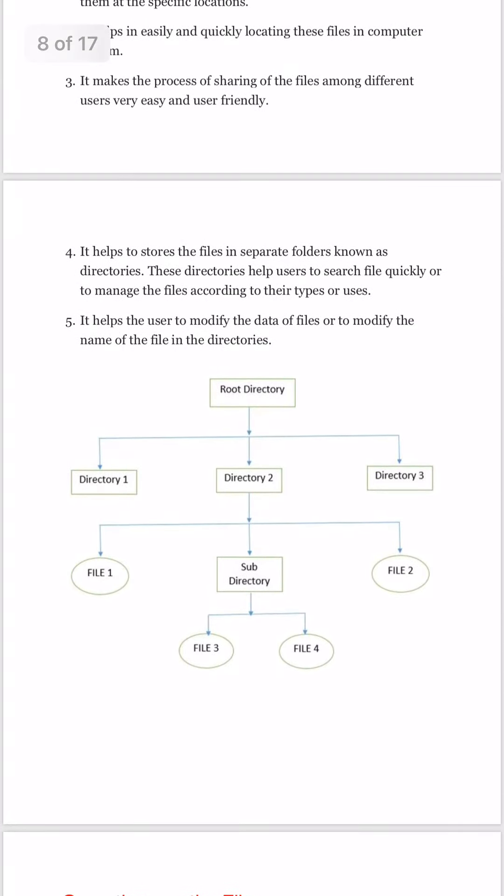What the diagram shows here is a root directory — the base. The base has further divisions: directory 1, directory 2, directory 3. In directory 2, we have further files: file 1, file 2. If we have created a directory, we can do further subdivision — like in directory 2 we have a further sub-directory. So we manage files properly. The motto of this is that creating directories is the best way to manage files.